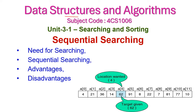In today's data structure class, we will start our third unit: Searching and Sorting. In this class, we will see in detail about sequential searching. Under this topic, we will see the need for searching, sequential searching, and the advantages and disadvantages of sequential searching.